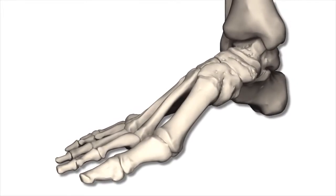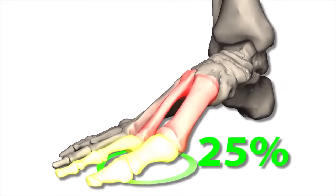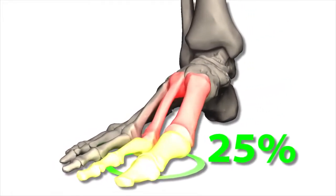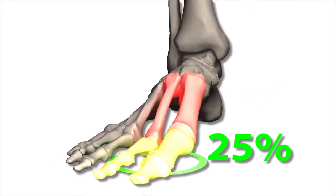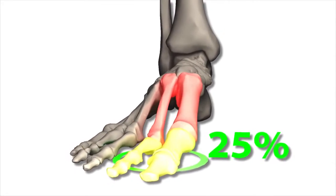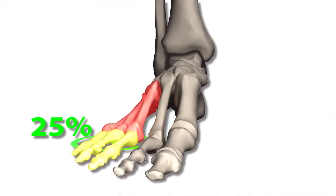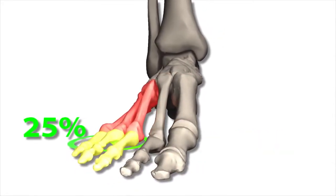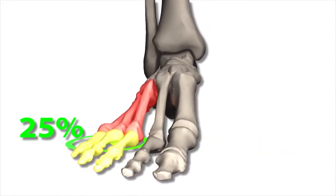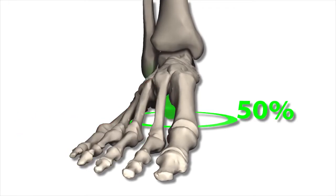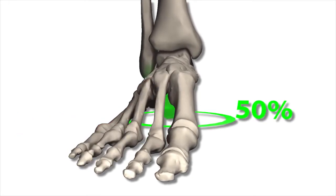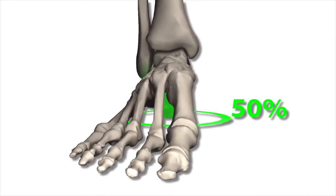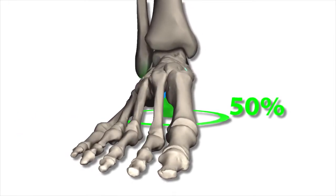In the midfoot, when a person is standing, the first and second metatarsals support about 25% of the body's weight. The three remaining metatarsals support about 25%, and the calcaneus supports the remaining 50% through the tarsometatarsal joints.